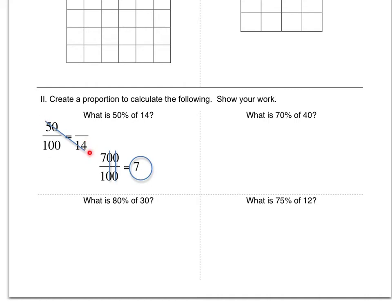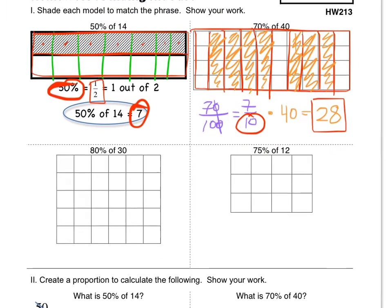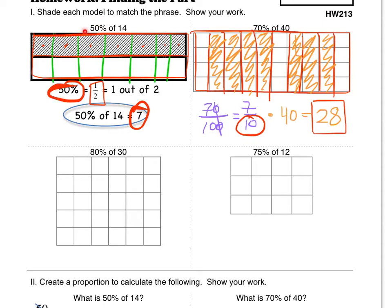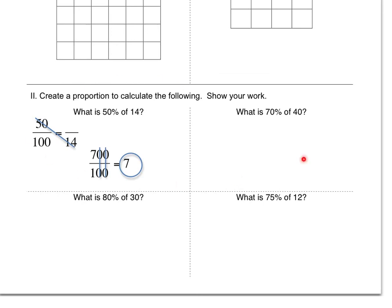And then you cross multiply here. 50 times 14 is 700. And then we're going to divide by this number here. So 700 divided by 100 ends up being 7. By the way, if you notice, all of these figures up here should yield the same answers as the ones down here because they're the exact same problem. So you should end up with the same answers, but you need to show your work here.